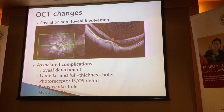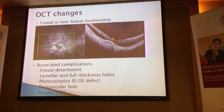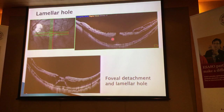Also look out for associated complications. Things like foveal detachment, lamellar holes, full-thickness holes, defects in the photoreceptor IS/OS junction, paravascular holes, and myopic CNV. I'm just going to show you examples of each of these.